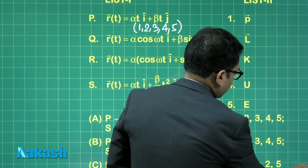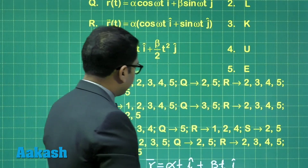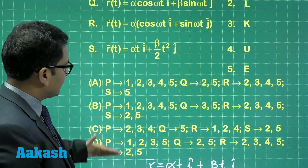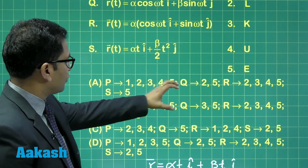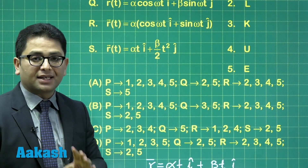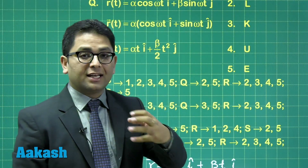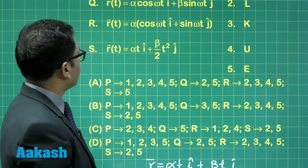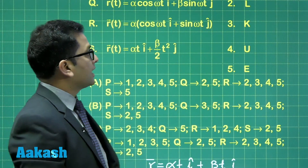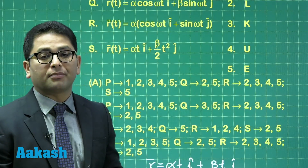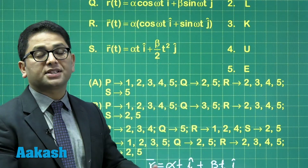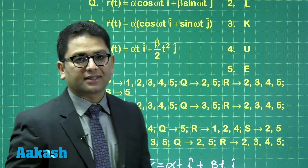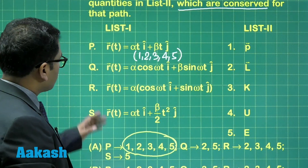In an examination, you need not solve the entire option if you can eliminate. For option P, having all five conserved exists only in answers A and B, so C and D can be eliminated. Now let's go for option Q, where R is α cos(ωt) î + β sin(ωt) ĵ, and we need to see which parameters among P, L, K, U, E are conserved.